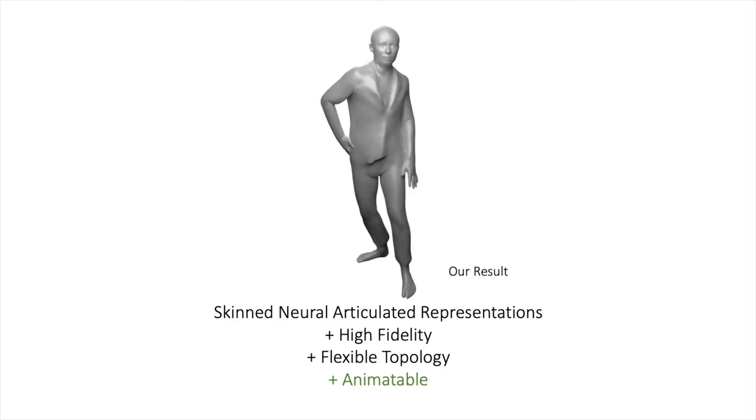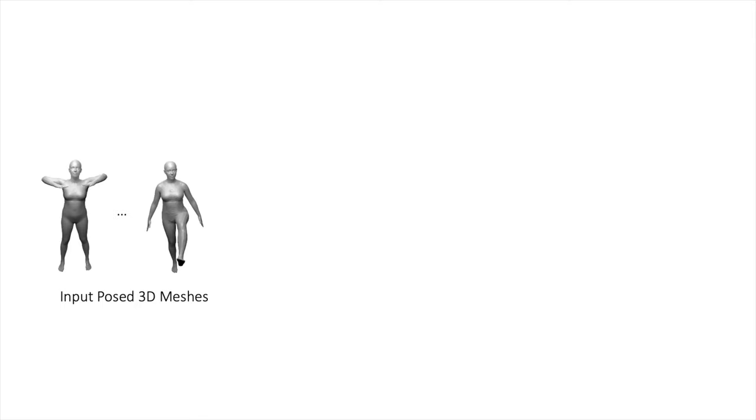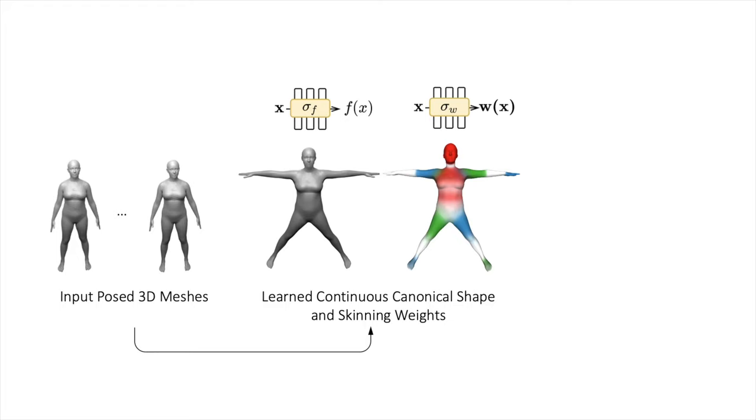The input to our method is a set of posed 3D meshes in combination with the corresponding object poses. Given this input, we jointly learn a shape and skinning weight representation in canonical space. This allows our model to reconstruct continuous implicit surfaces for unseen poses, even in cases where the target pose is far from the poses observed during training.